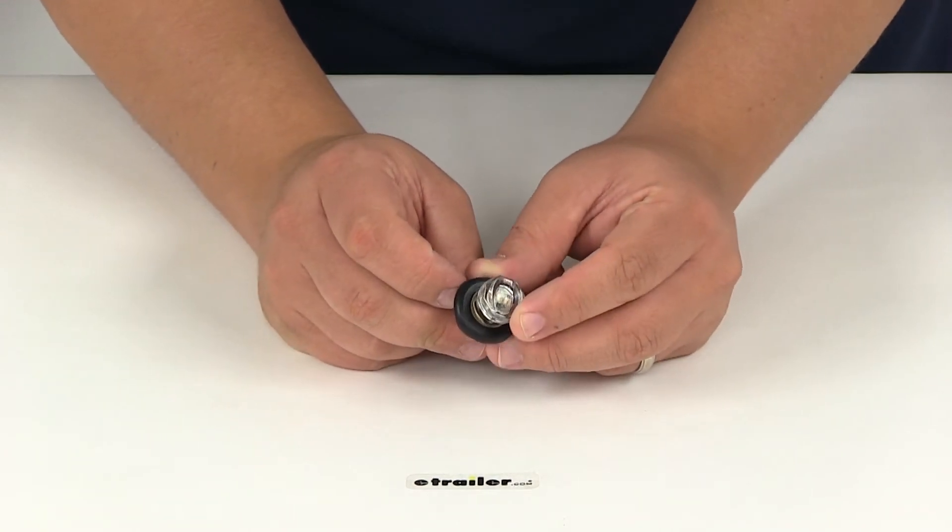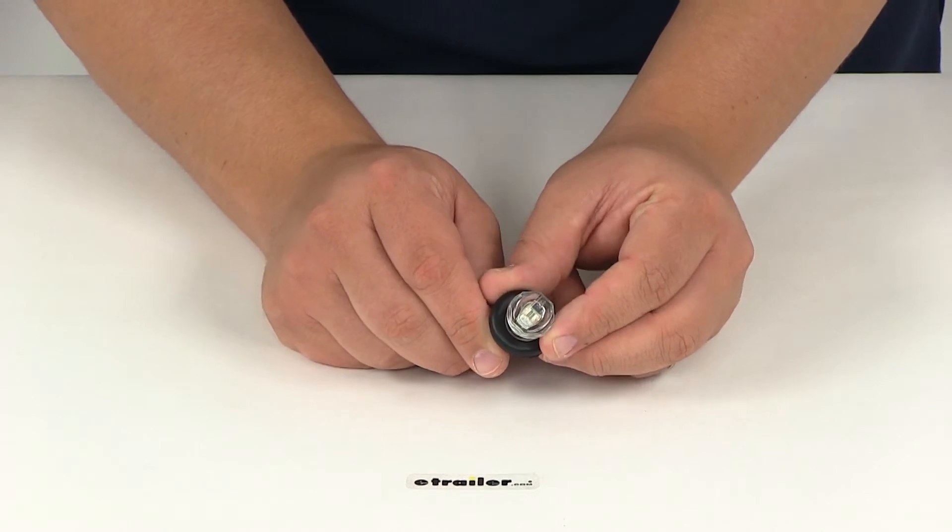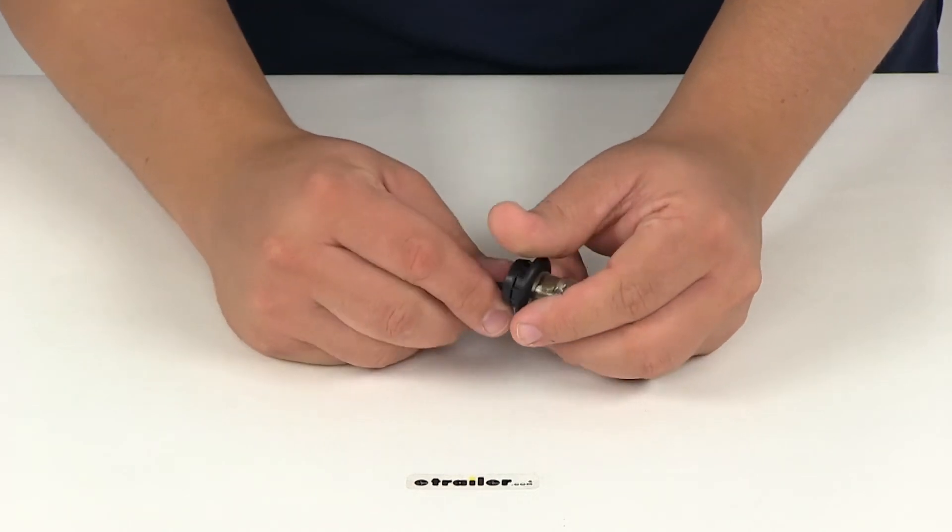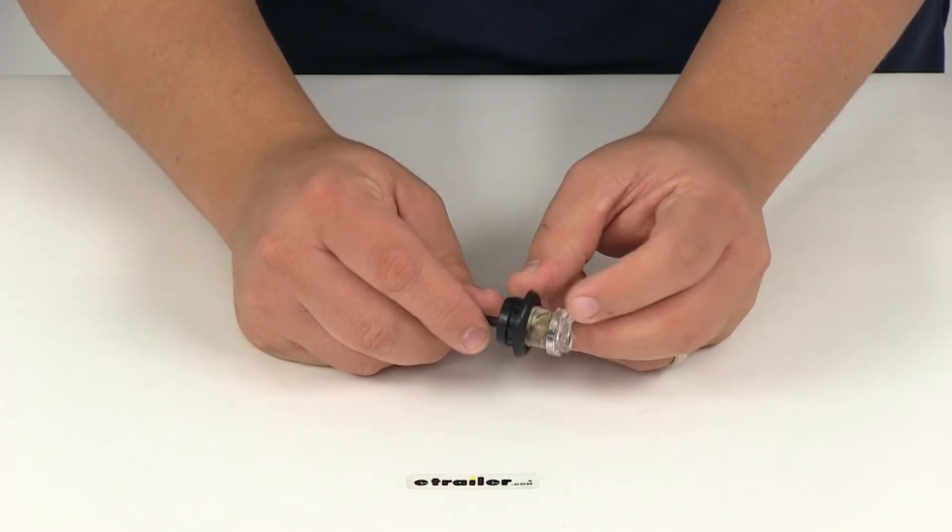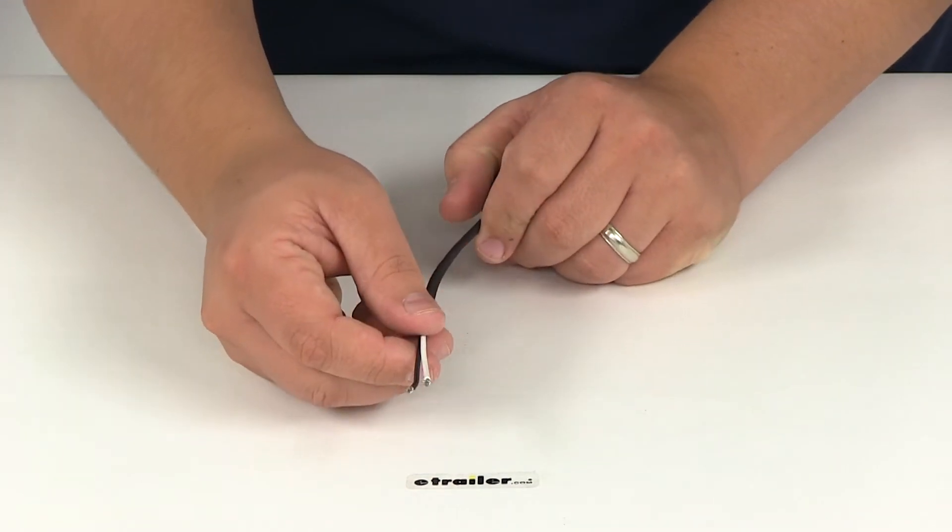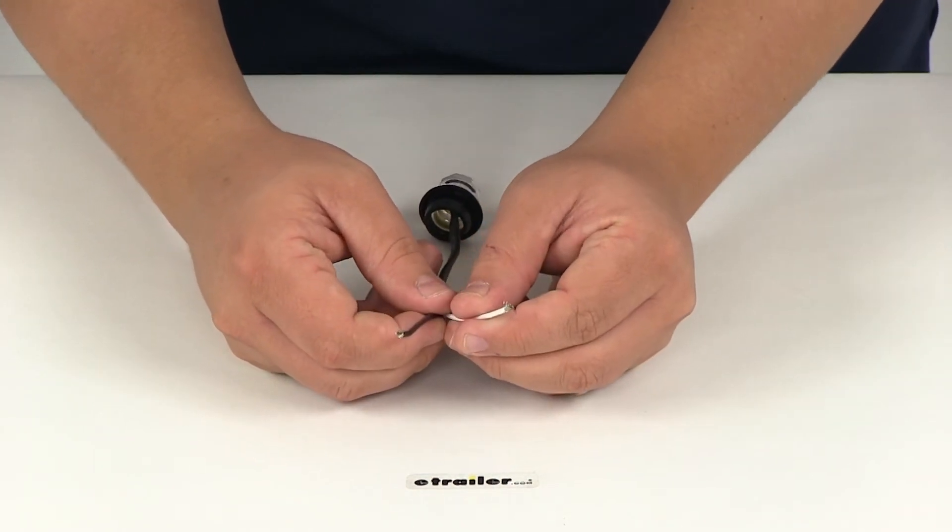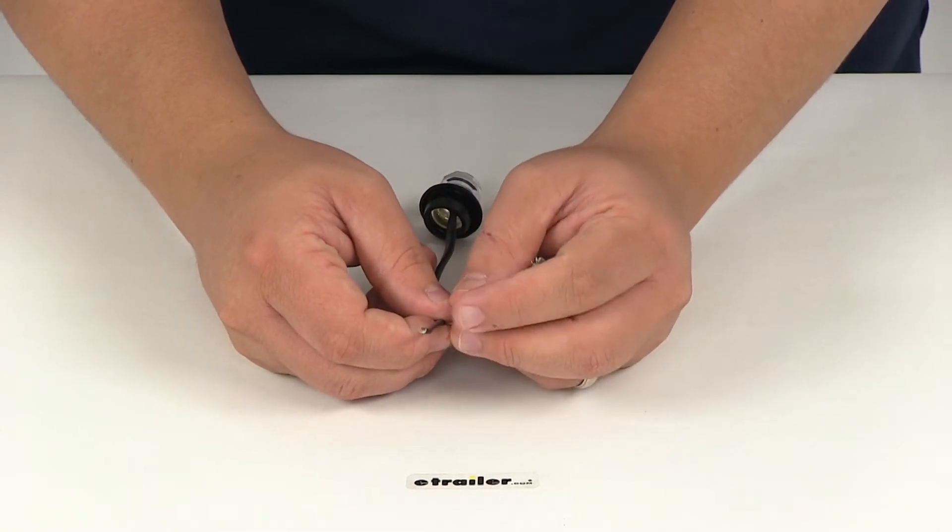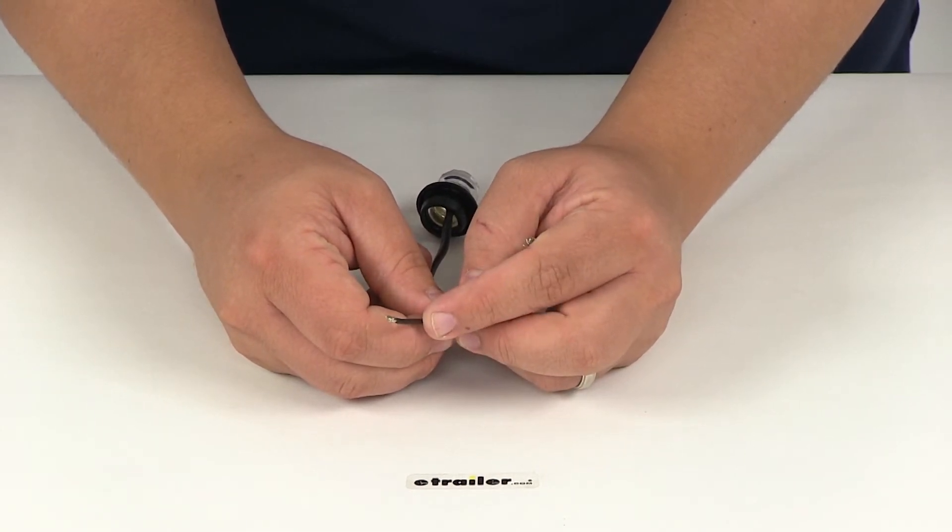It features a crystal clear impact resistant polycarbonate lens. The housing is waterproof and the lens is waterproof. It features a two wire design. You have the white wire which is your ground connection and the black wire which is your lead wire for power.